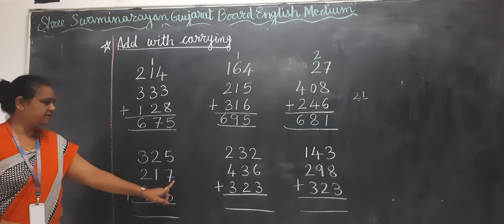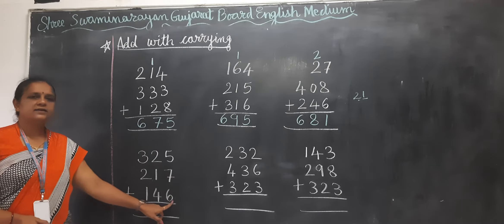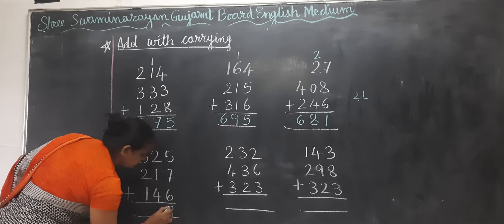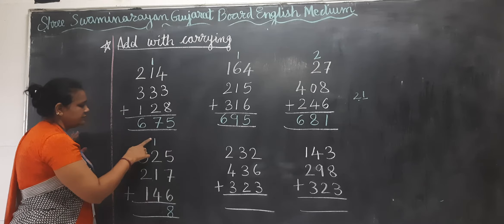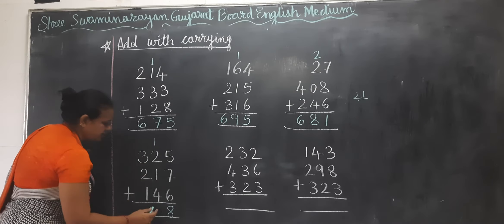Next. 5 plus 7 equals 12. 12 plus 6 equals 18. So here 1. 1 plus 2 equals 3. 3 plus 1 equals 4. 4 plus 4 equals 8.